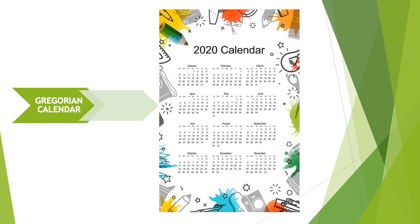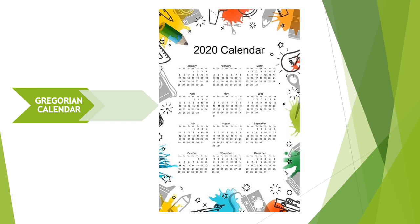The first calendar we are going to learn about is the Gregorian calendar. The Gregorian calendar is internationally the most popular civil calendar. It was introduced by Pope Gregory the 13th in October 1582. It is followed in most of the countries of the world. This calendar is a solar calendar, which means it is connected to the sun.